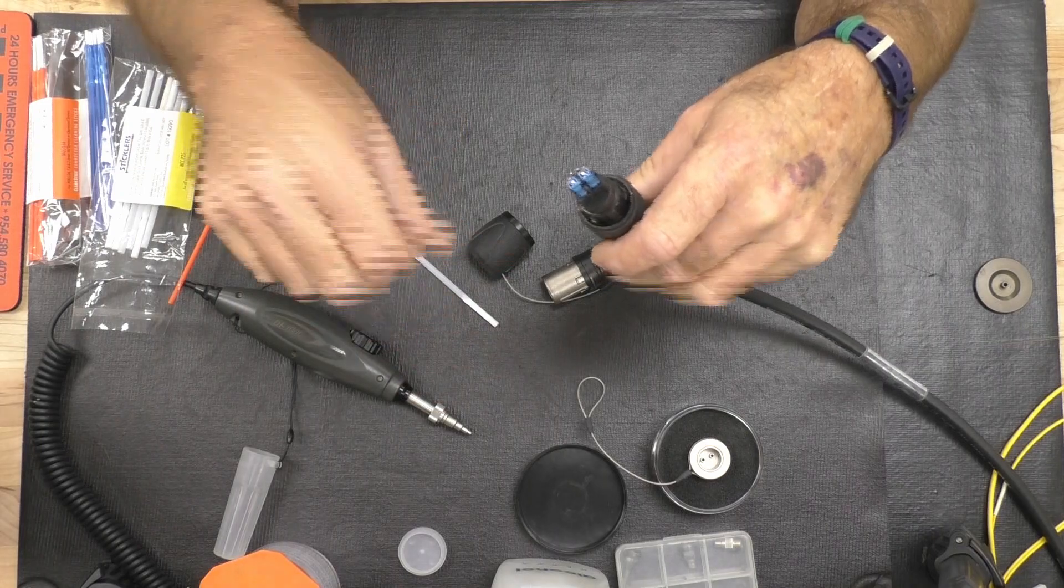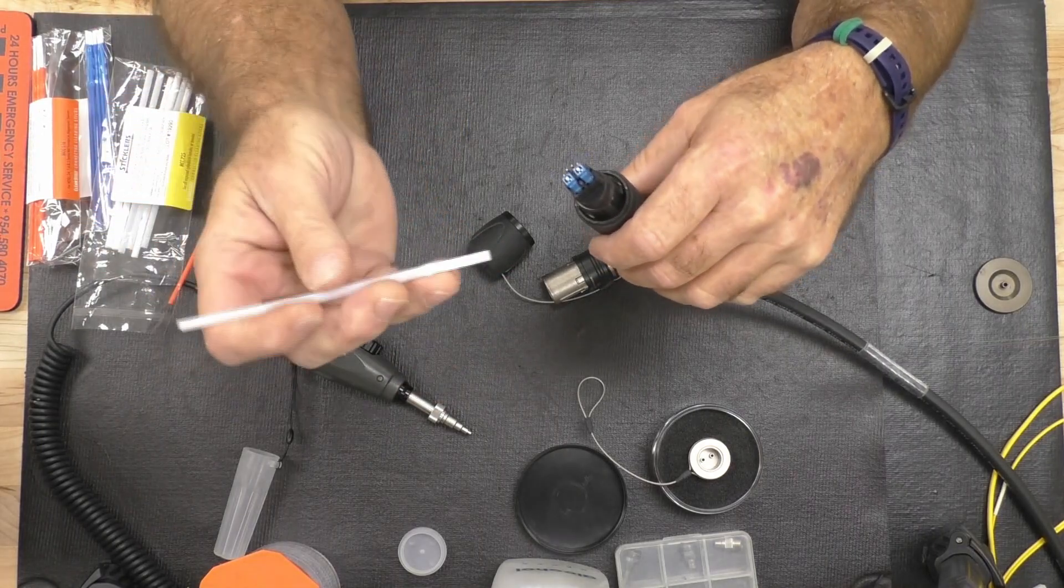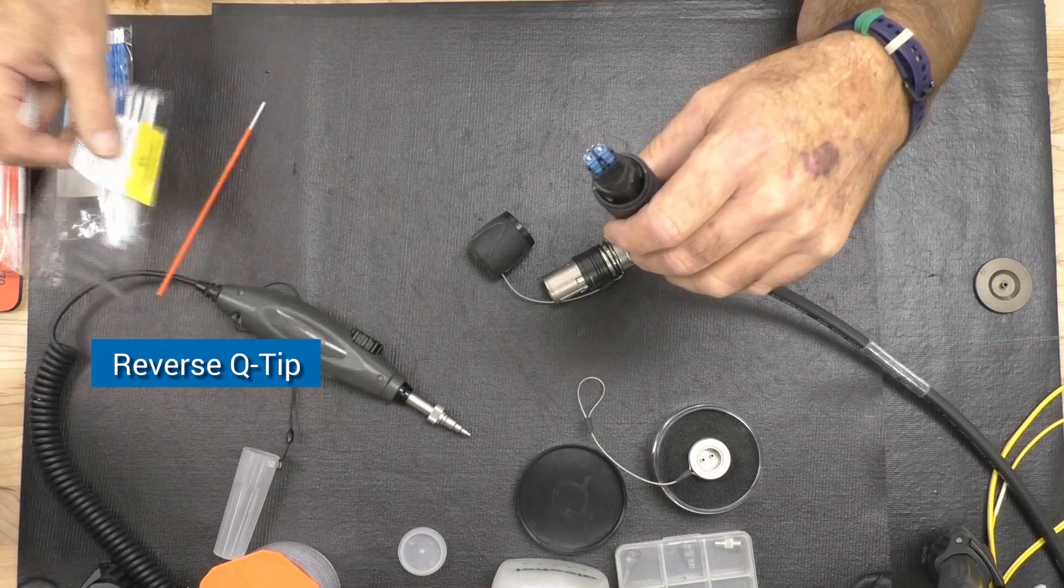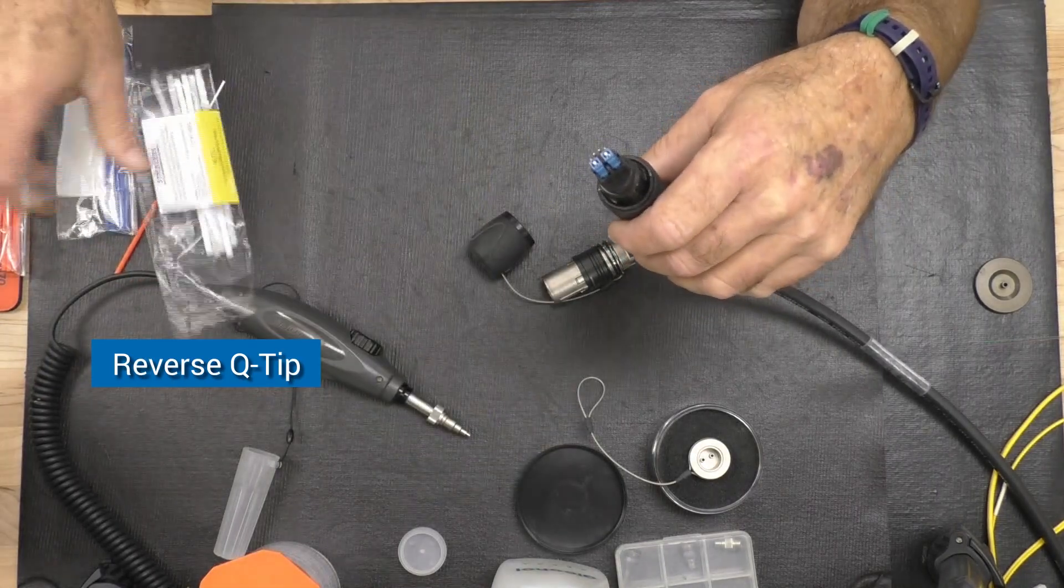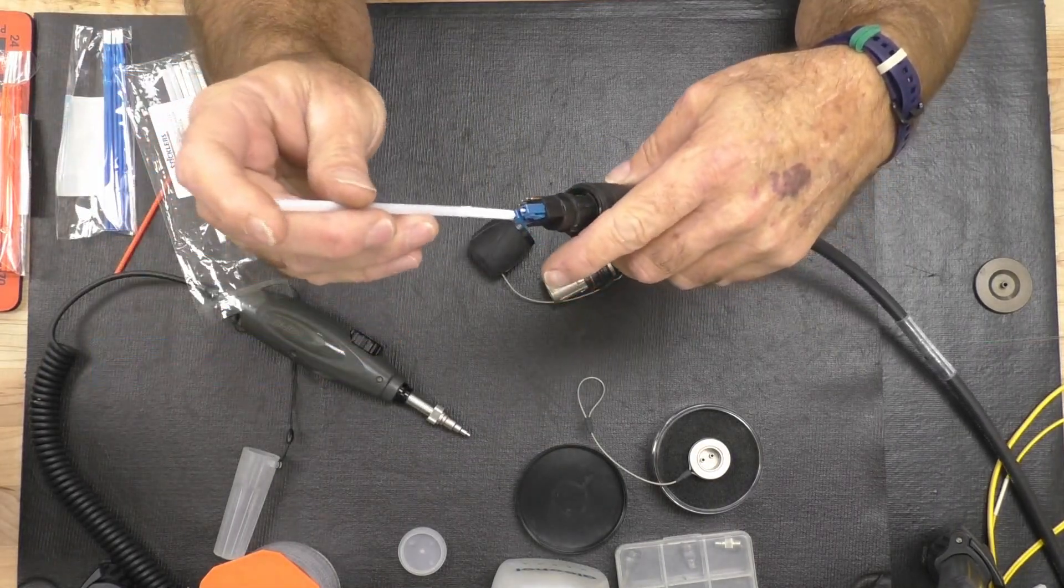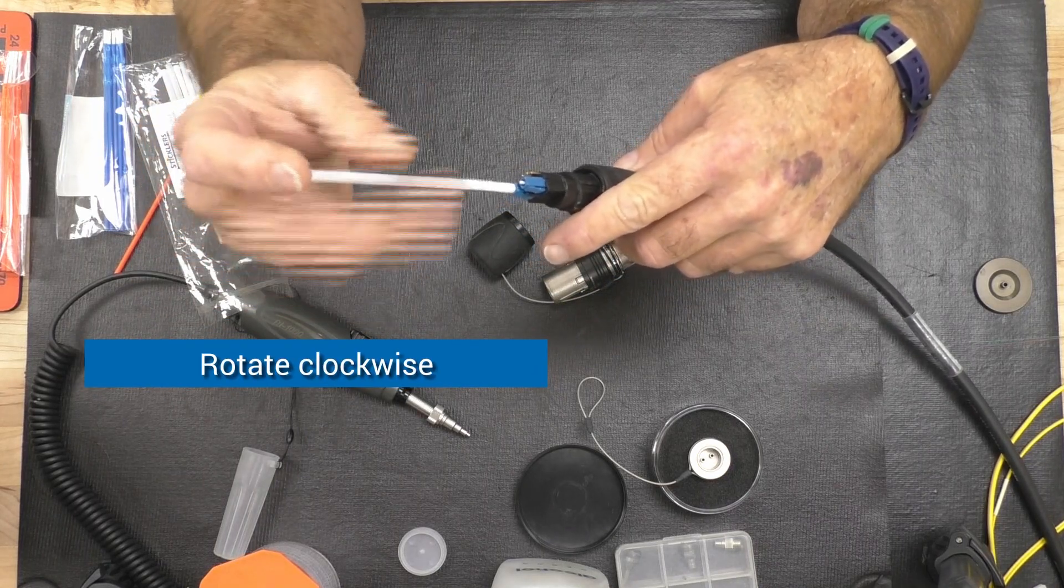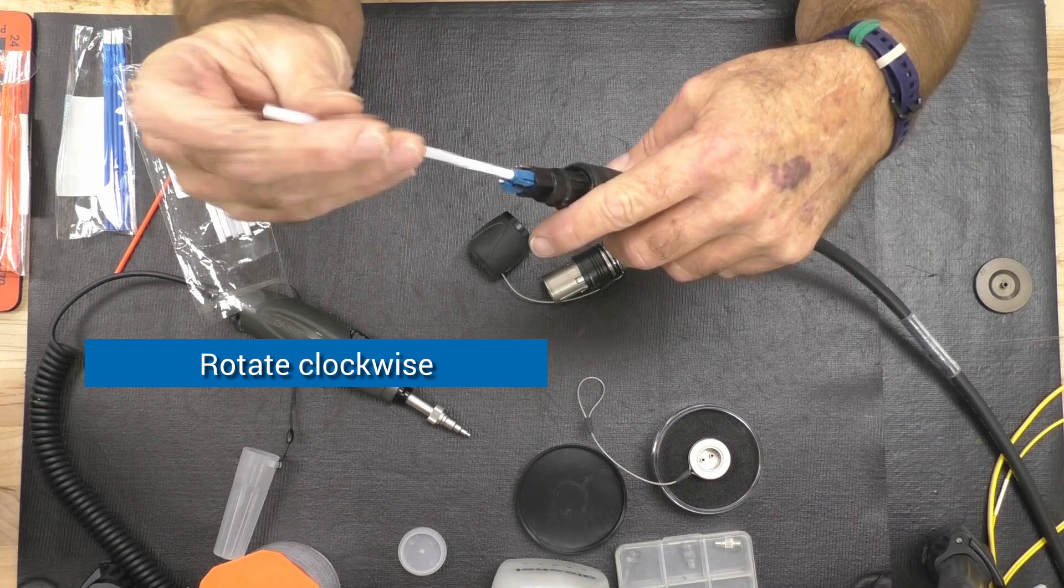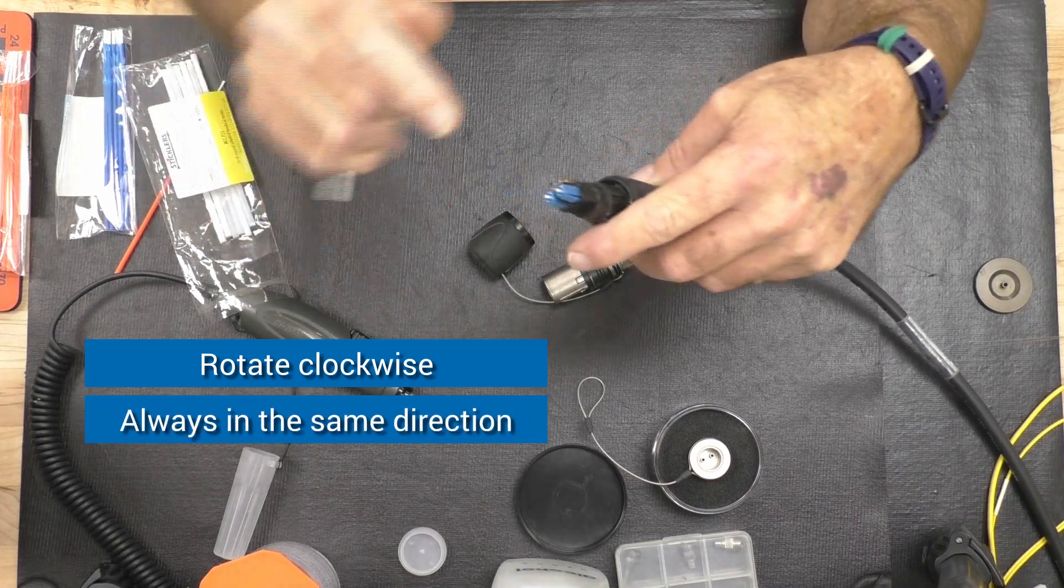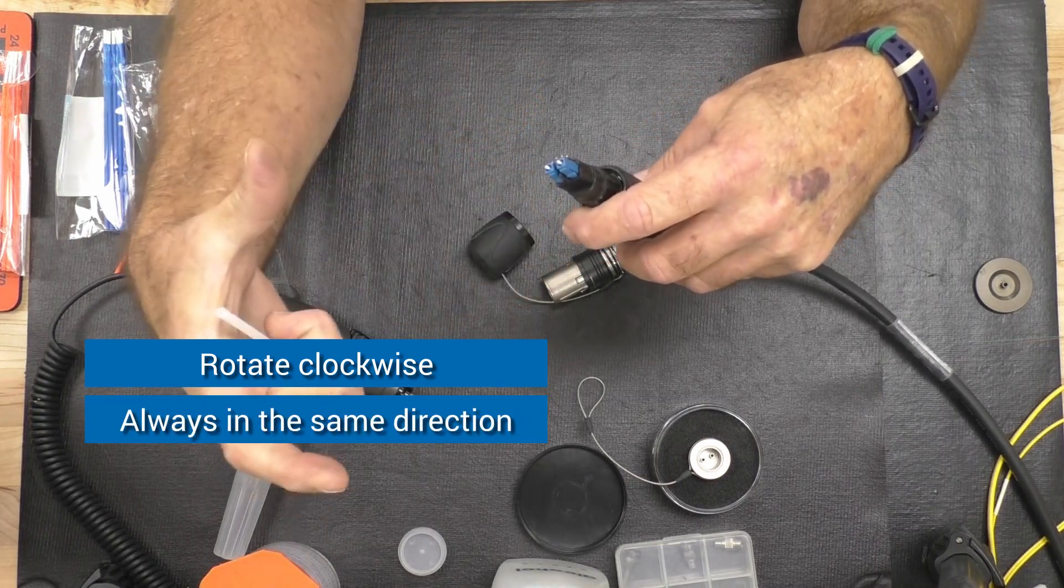Now that you have exposed contacts, you can use the reverse Q-tip, kind of a design made by Stickler. It's the 25. I particularly like it. You press it onto the end of the contact and you rotate. I prefer clockwise manner. Always go in the same direction. It removes the dirt from the center to the outside.